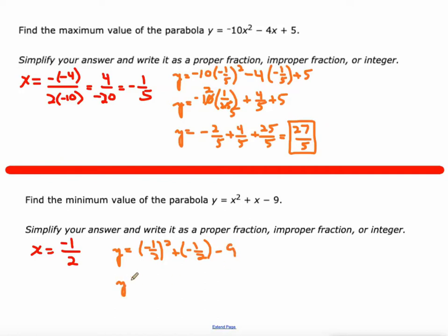So that gives us 1 fourth minus 1 half. I'm going to make it 2 fourths minus 9. I'm going to make that 36 fourths. And so 1 minus 2 is negative 1. Negative 1 minus 36 is negative 37. Negative 37 fourths is our minimum value. That's the lowest the parabola ever gets to.